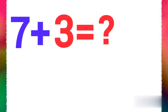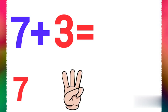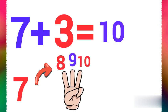Another example: 7 plus 3. Let's start with bigger number 7, and 3 fingers up. Let's count. 7, 8, 9, 10. 7 plus 3 equals 10.